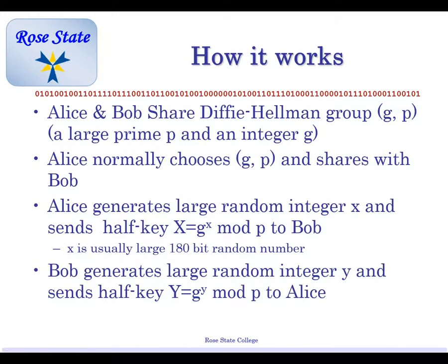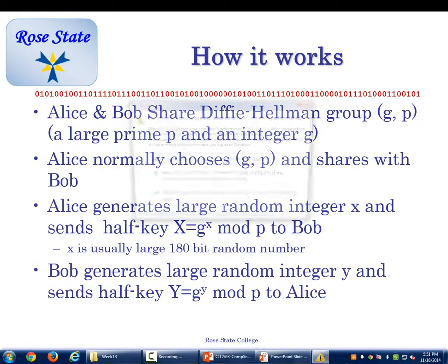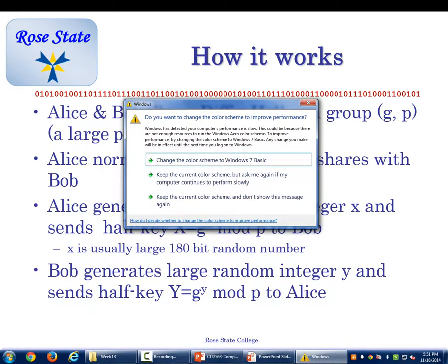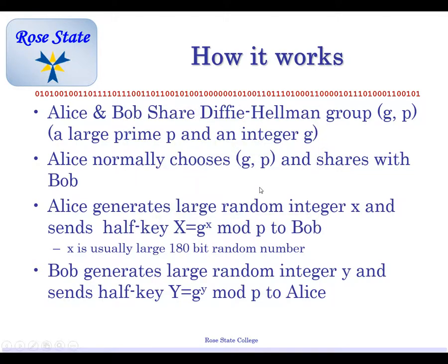How it works. Alice and Bob share a Diffie-Hellman group. G and P are the letters for that. They also share a large prime number P and an integer G. So they're basically, P is a large prime number, and the integer is G. So we're sharing that.